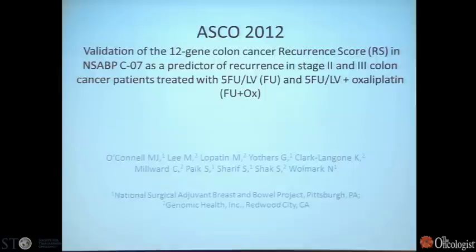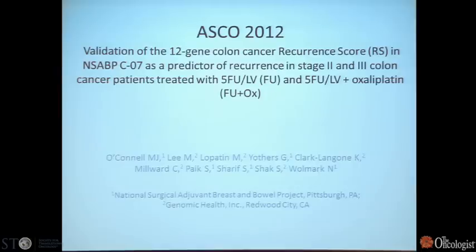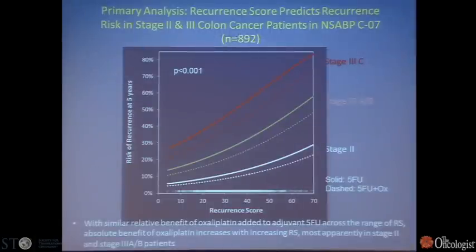Perhaps more interesting was data presented at ASCO this year from the NSABP group, who looked at the recurrence score in study CO7. CO7 looked at adding oxaliplatin to 5-FU and leucovorin in patients with stages 2 and 3 colon cancer. Importantly, oxaliplatin does improve survival in stage 3 patients, not so much in stage 2. The decision to give oxaliplatin matters because patients will occasionally have long-term neuropathy after treatment, so it's not a given that all patients should receive it.